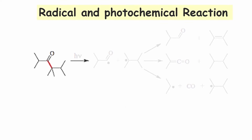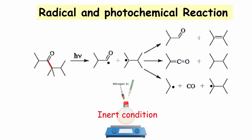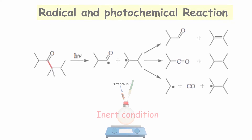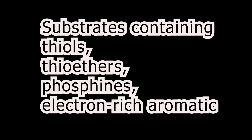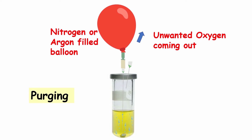The next type of reaction which needs degassing is radical and photochemical reactions. As a general rule, radical reactions must be degassed unless oxidation is the final product. Another group of reactions which require degassing is when a reaction contains substrates like thiols, thiol esters, phosphines, electron-rich aromatics, etc. So these are some of the reactions which definitely need to be degassed before putting the reaction.